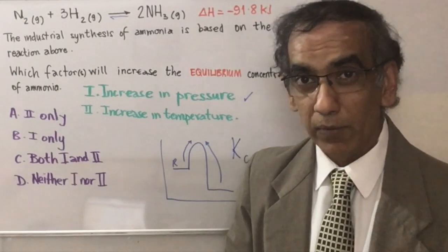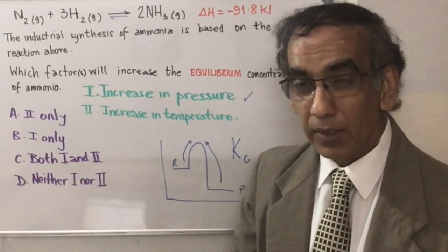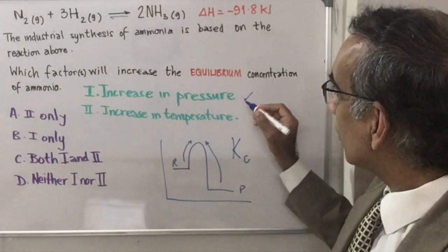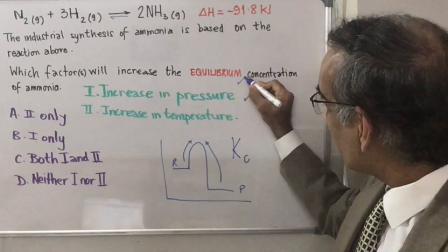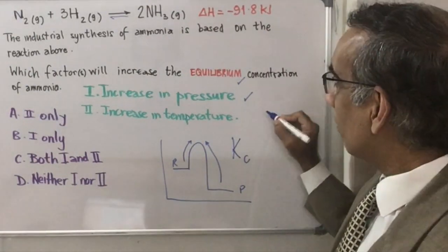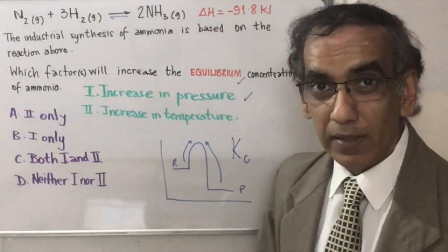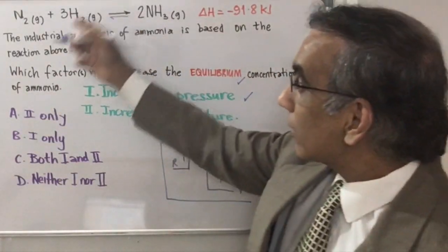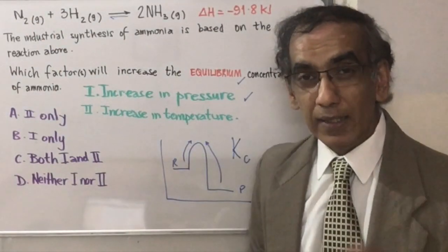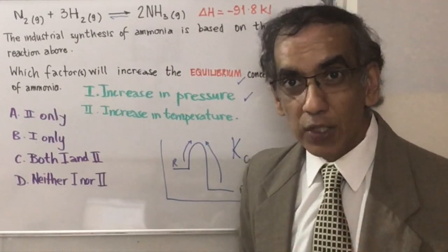All the pressure does is drive the reaction forward faster. It increases the rate of the reaction, which is why the Haber process happens at a high temperature. But increasing the rate does not mean that it would change the equilibrium concentration of ammonia. So the equilibrium concentration of ammonia would not be increased by an increase in pressure. It doesn't change Kc.